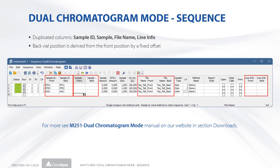In the sequence table, many columns have been duplicated so that you can input different values for the front and back positions. The position of the back file is derived from the front position by a fixed offset specified in the method. For more information about dual chromatogram mode, please refer to the M251 manual.